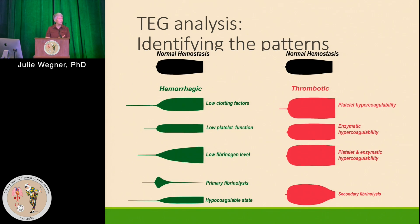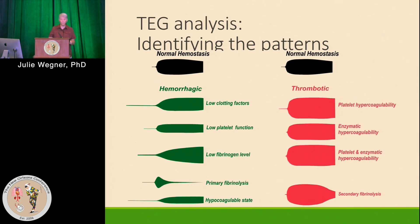One of the best things you can do, once you get good at TEG analysis, is that you start seeing patterns. Those patterns are going to be based on the R, the angle, K values, the MA, and fibrinolysis — all of those different things come together to give you the pattern that you can then potentially identify what's going on with this patient.